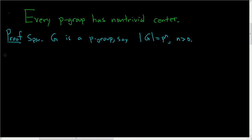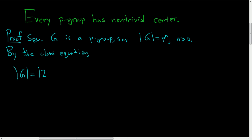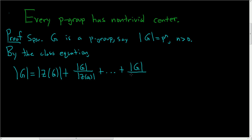To prove this, we're going to use the class equation. By the class equation, the order of G is equal to the order of the center, plus the order of G divided by the order of the centralizer of a_1, plus dot dot dot, plus the order of G divided by the order of the centralizer of a_k.